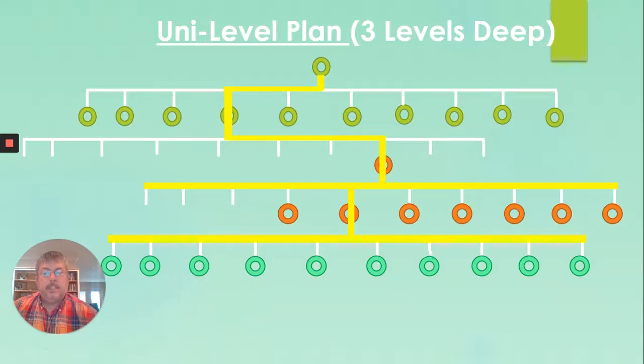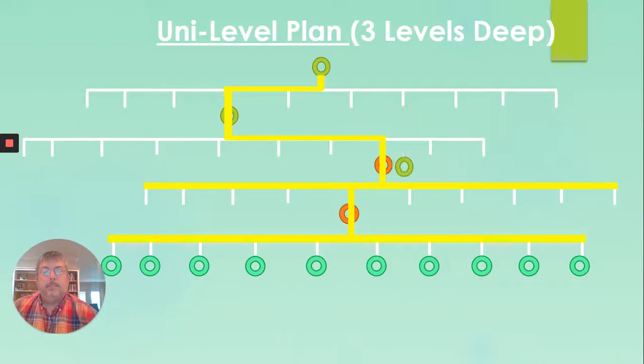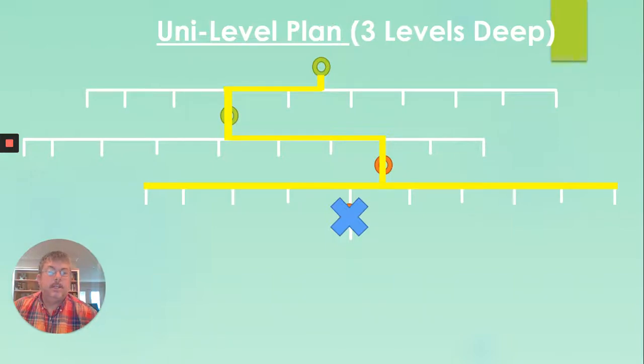But over time, in this industry, we know people quit. So these people start quitting. And you've still got your line of sponsorship. But when you get to this point, you're only getting paid on three people. You're not getting paid on these other people because they're more than three levels down. So you might as well just take that out of the equation because as far as your pay is concerned, they're not even there.